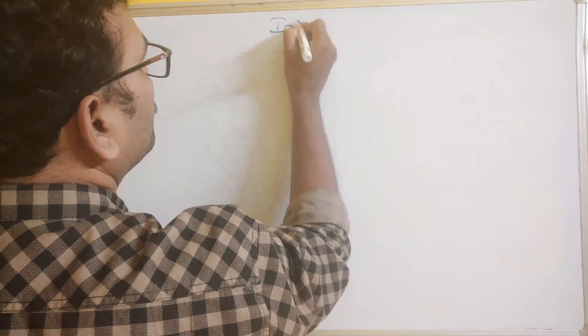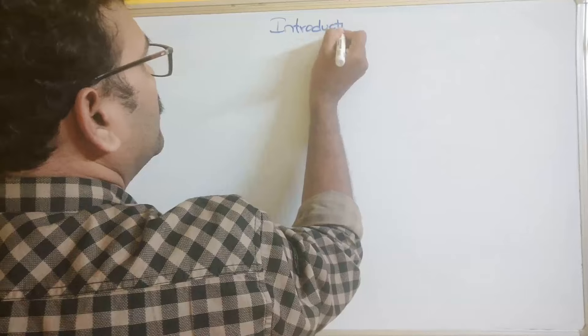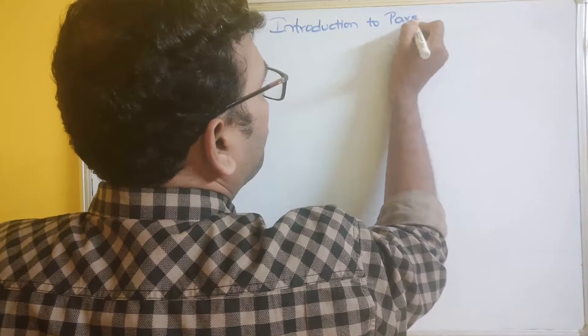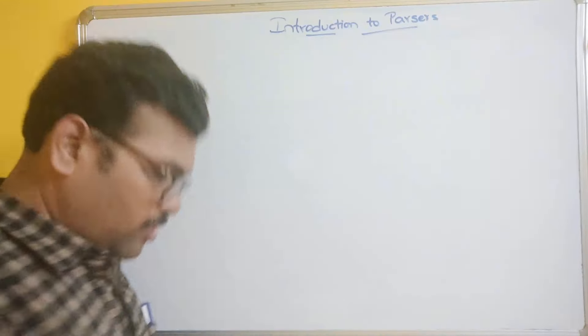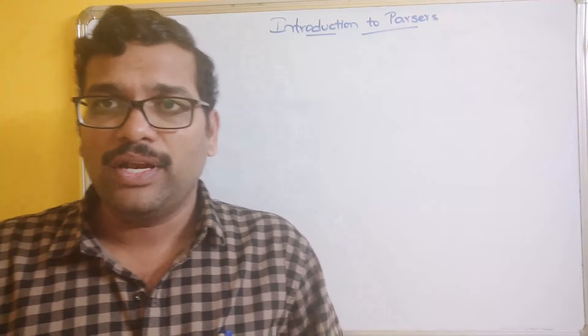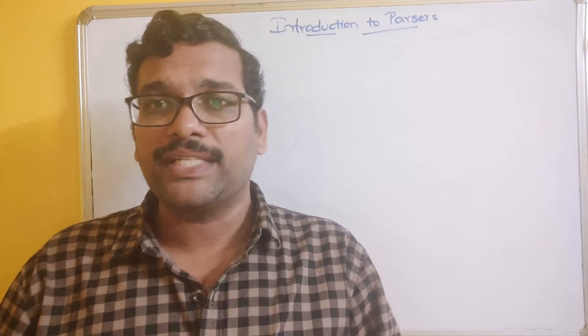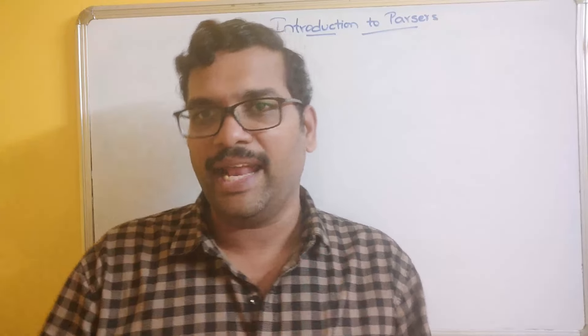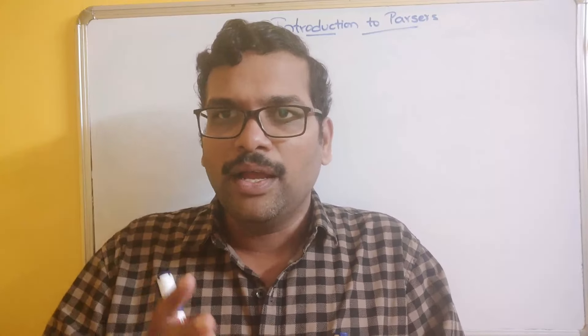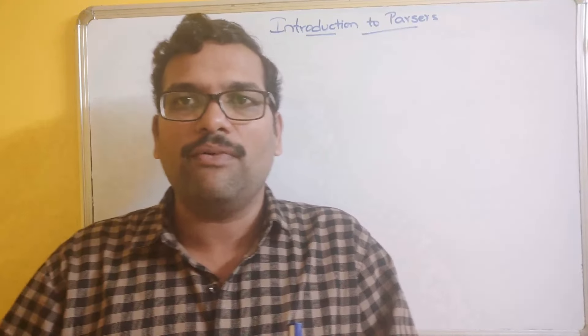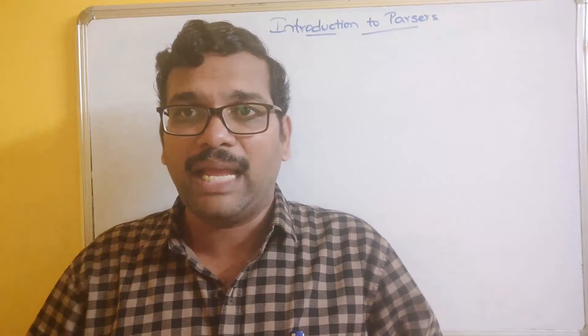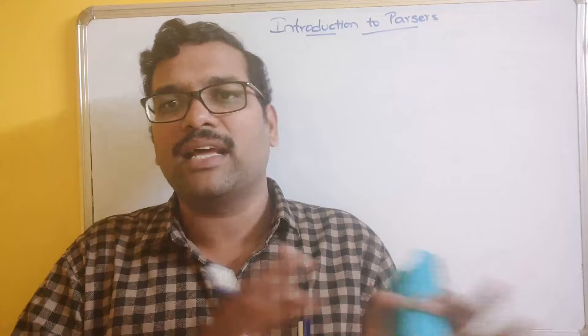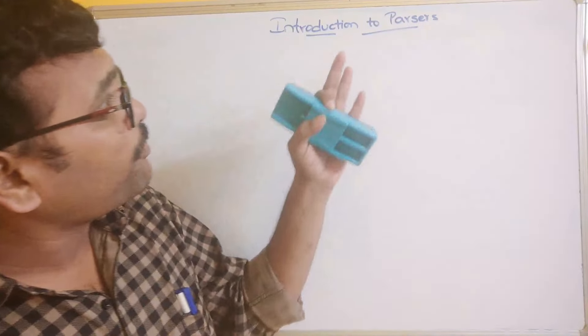Hello friends, welcome back to our channel. Today we will see one more concept in compiler design — introduction to parsers. Let us recollect the previous concept. We have seen so far the first phase of compiler design, that is the lexical analyzer, which takes the source code as input and produces a sequence of tokens as output. It also creates a symbol table which consists of all the lexemes and the corresponding token information.